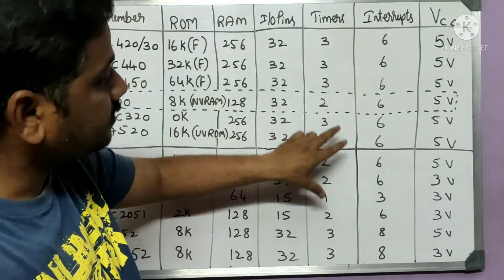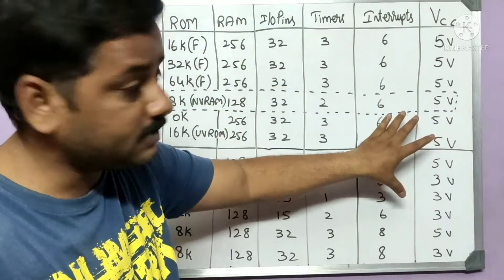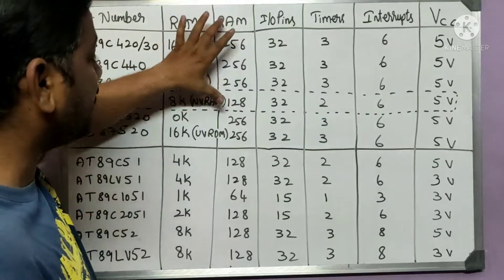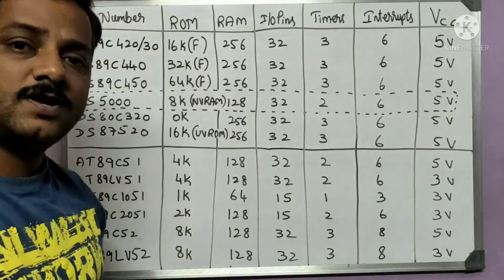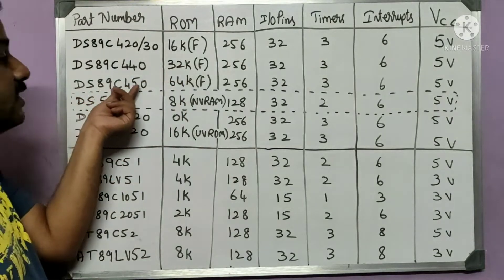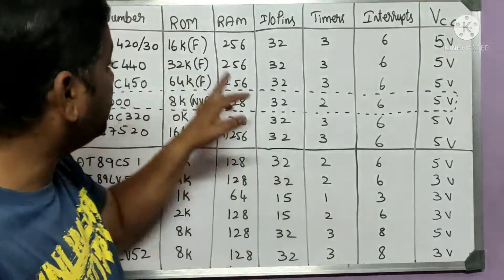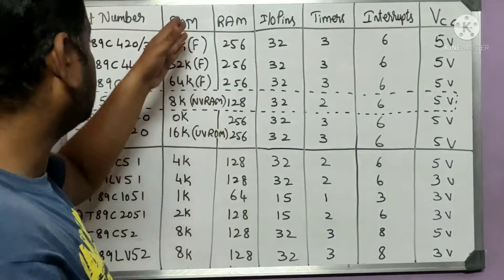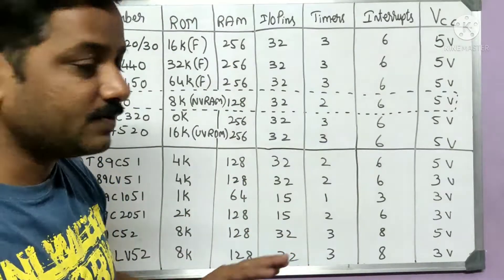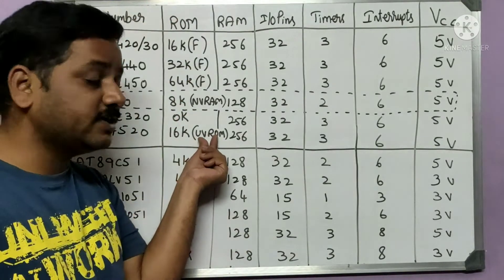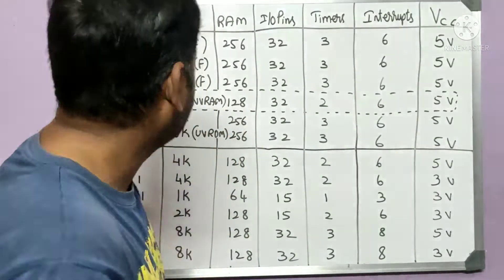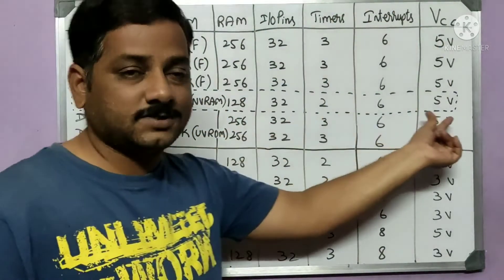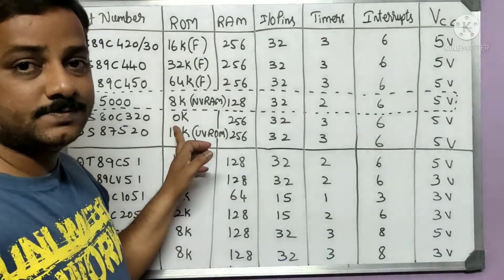Across the Dallas series, timers differ slightly in some models, but all share six interrupts and the same operating voltage, with the same I/O pin count. If you need higher ROM, the DS89C450 offers 64K — the 'F' indicating flash memory, which determines how the program is erased. Some use flash memory, some use UV ROM, and some use NV RAM. One model has 0K on-chip ROM, making it similar to the 8031.